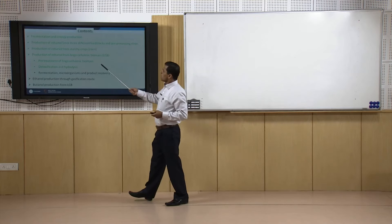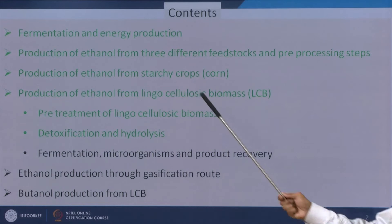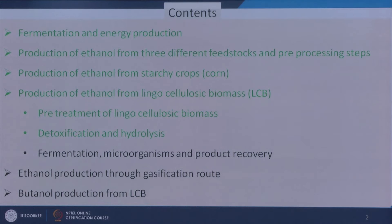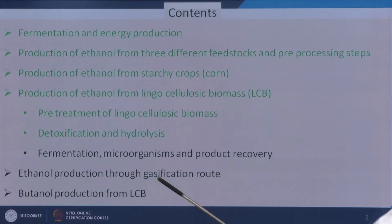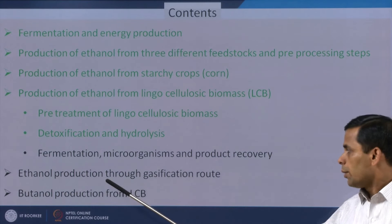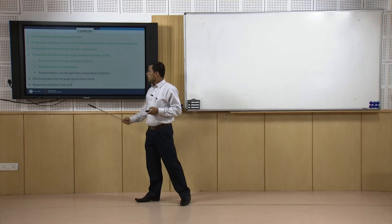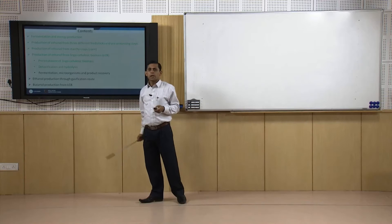The contents of this module will be: fermentation and energy production; production of ethanol from three different feedstocks and pre-processing steps; production of ethanol from starchy crops; production of ethanol from lignocellulosic biomass, which will include pretreatment, detoxification, hydrolysis, fermentation microorganisms, and product recovery; ethanol production through the gasification route — that means from syngas to ethanol; and finally, butanol production from lignocellulosic biomass (LCB).